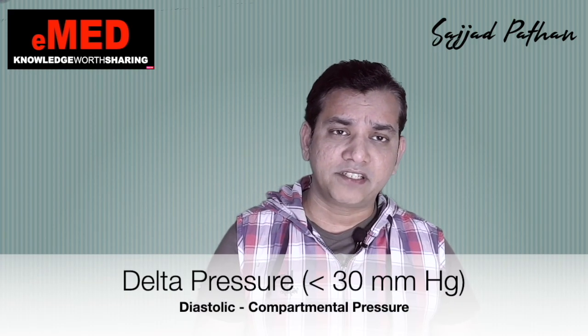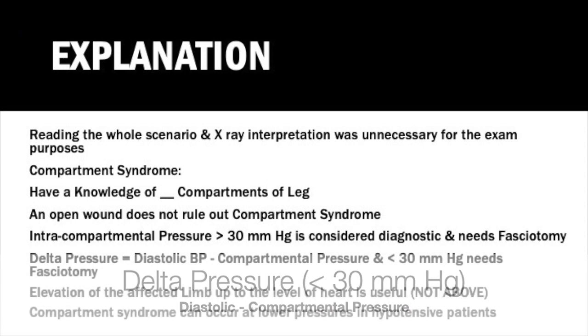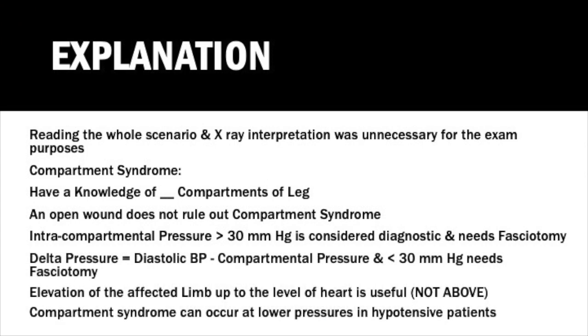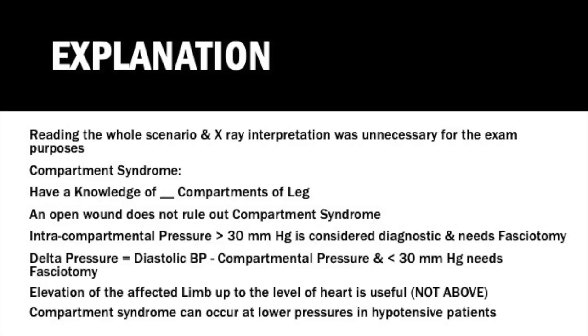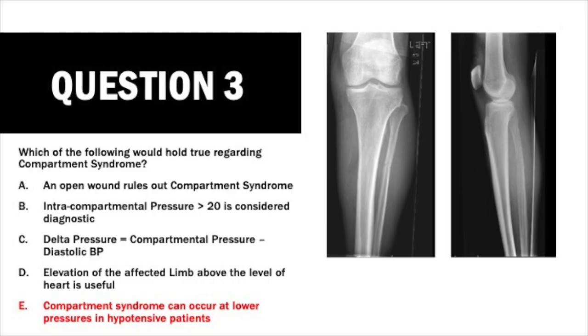Delta pressure is diastolic pressure minus compartmental pressure. A delta pressure less than 30 mmHg is diagnostic and requires fasciotomy. Elevation of the affected limb to the level of the heart is useful — not above the level of the heart. Compartment syndrome can occur at lower pressures, especially if the patient is hypotensive. The answer is: compartment syndrome can happen at lower pressures in a hypotensive patient.